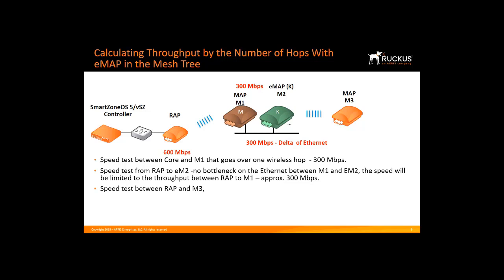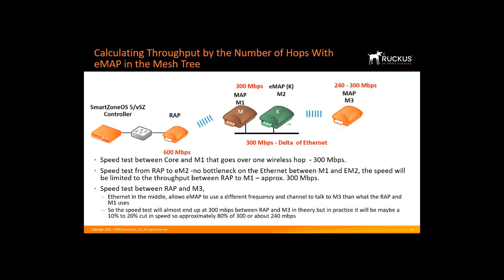Running a speed test between the root AP and M3 — because we have Ethernet in the middle — allows the eMAP to use a different frequency to talk to M3 than what the root AP and M1 use. Assuming the root AP and M1 are on different channels than eMAP M2 and M3, packets between the root AP and M1, and between M2 and M3, can travel over the air at roughly the same time and are fairly independent. The speed test will approach 300 Mbps in theory, but in practice will be 10–20% less, so approximately 240 Mbps.